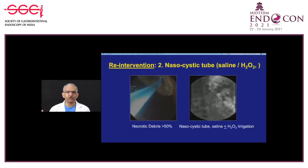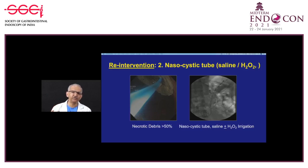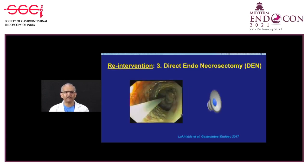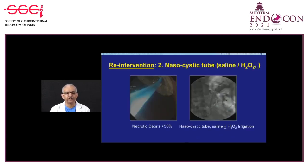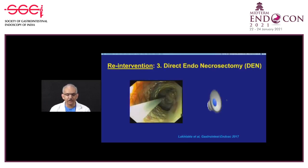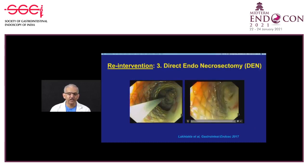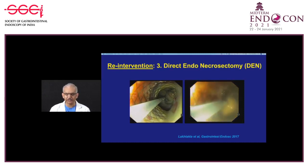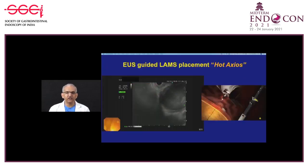If debris is stuck to the back wall of the cyst and not coming out easily, it may be better to place a nasocystic tube and irrigate with hydrogen peroxide, saline, or a combination. Saline is generally preferred; if there is infection inside, hydrogen peroxide is also used—8 hourly, 10 to 20 ml. For actual physical removal of debris, the endoscope goes inside the cavity, and a snare catches bits and pieces to take them out.